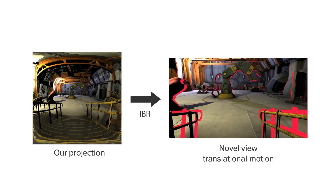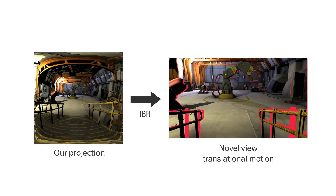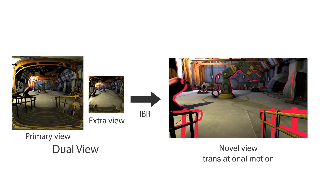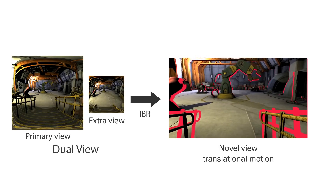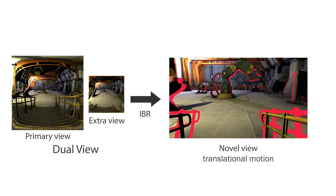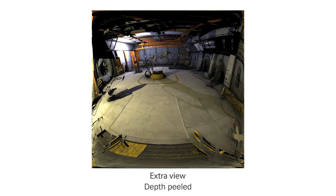Translational motion causes a different kind of parallax-induced disclusion — holes are revealed across the whole image. To fill these in, we generate an extra view at quarter resolution. We call the pair of primary view and extra view a dual view. The extra view content should not be redundant, so we use a depth-peeling technique to scrape off any surfaces already stored in the primary view.